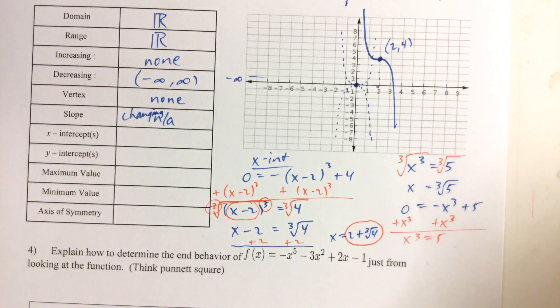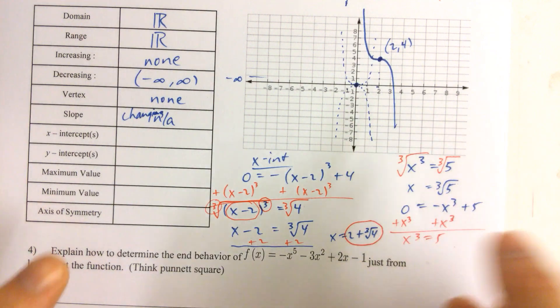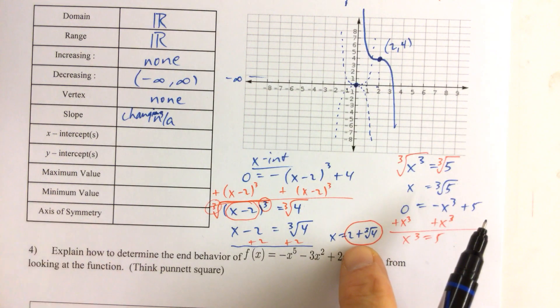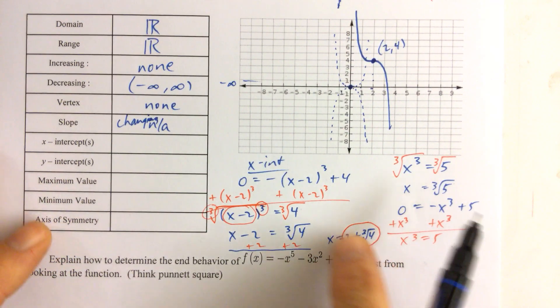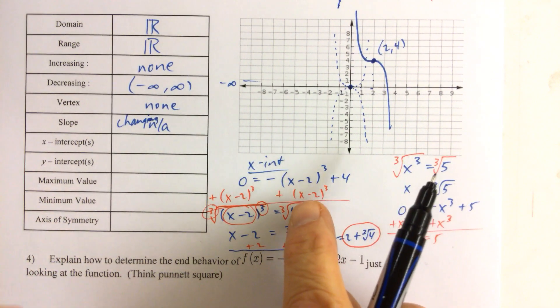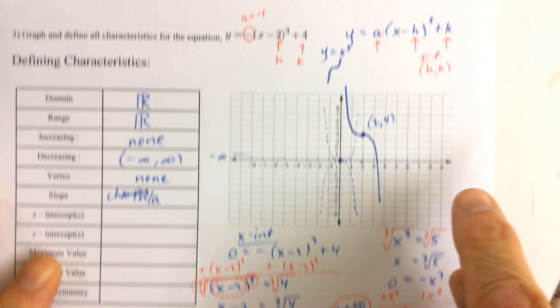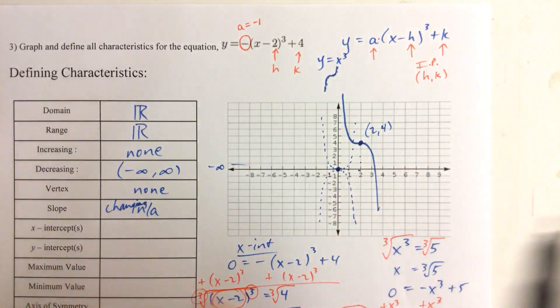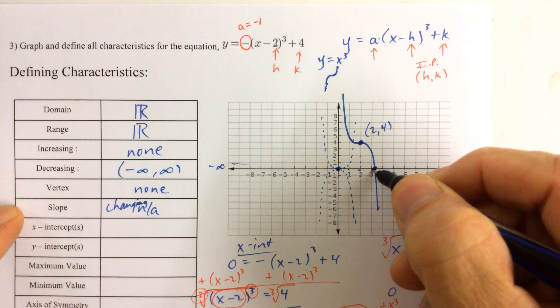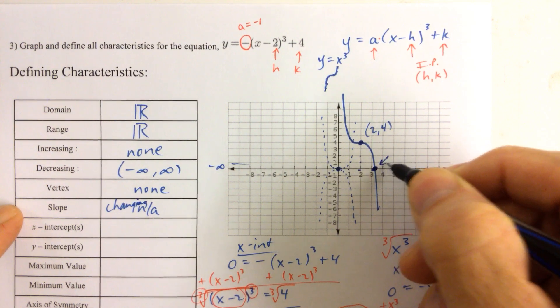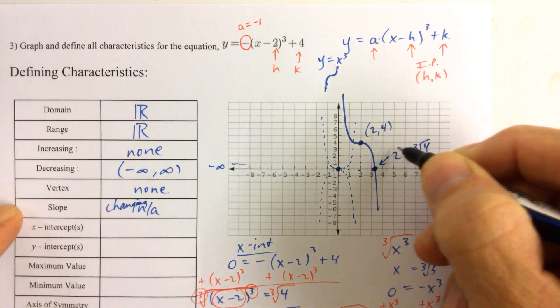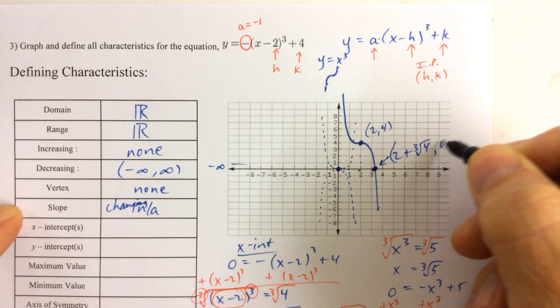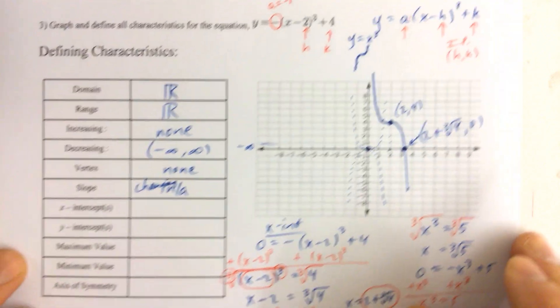Fast forward to this problem here. There's only one solution. If you put 2 plus or minus cube root of 4, then you would have found two solutions to this equation, which means you would have said there were two x-intercepts. But look at the graph. There's only one x-intercept, and it's right there. That x-intercept has coordinates 2 plus cube root of 4, comma 0.